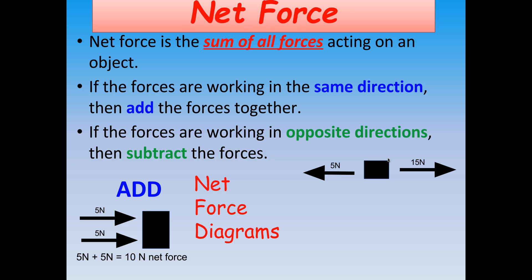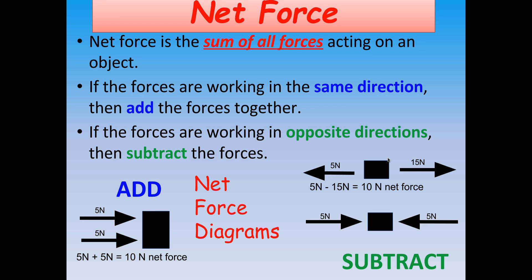Take a look at this net force diagram. Here we have two forces working on this box, but now they're going in opposite directions, so we subtract to determine the net force. 5 newtons minus 15 newtons gives a net force of 10 newtons. And here's another net force diagram where forces also act in opposite directions. Subtracting 5 newtons and 5 newtons gives 0 newtons of net force on the box. We can use these net force diagrams, which use vectors, to figure out the forces acting on an object.